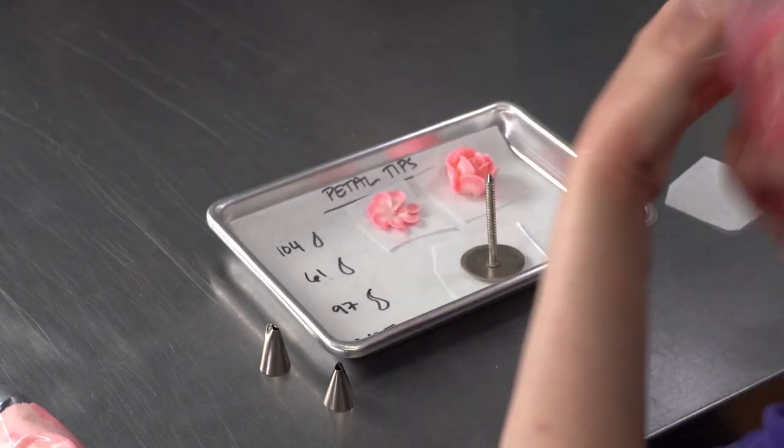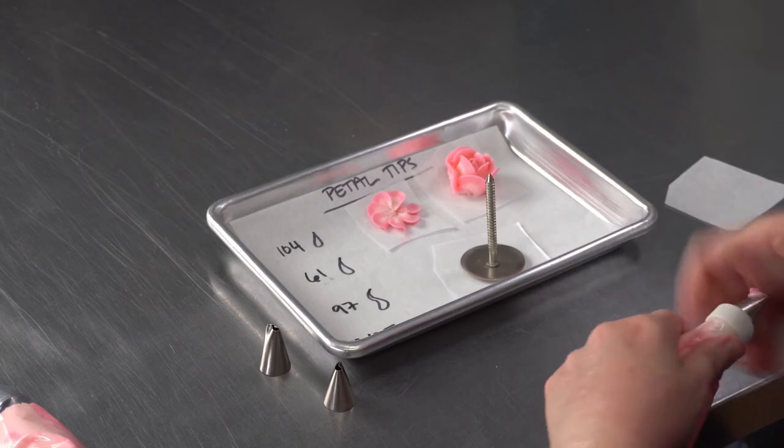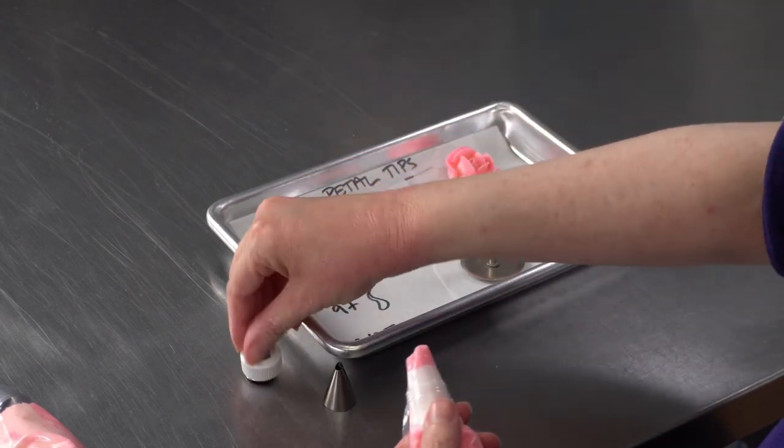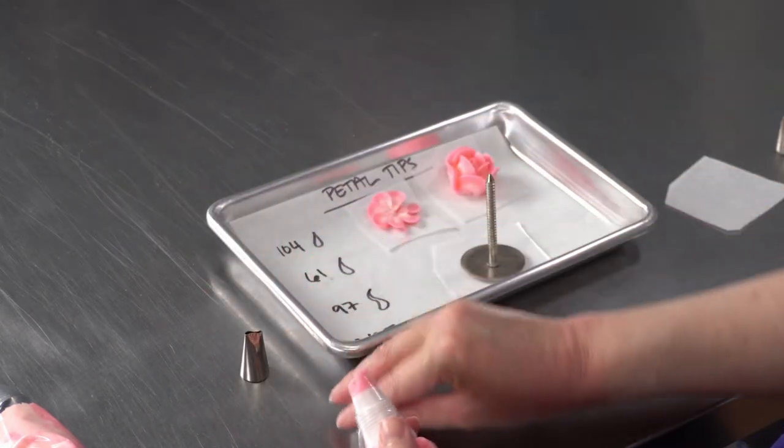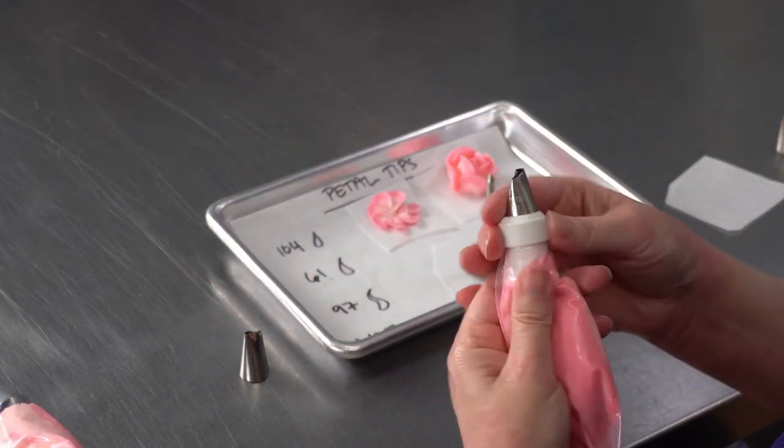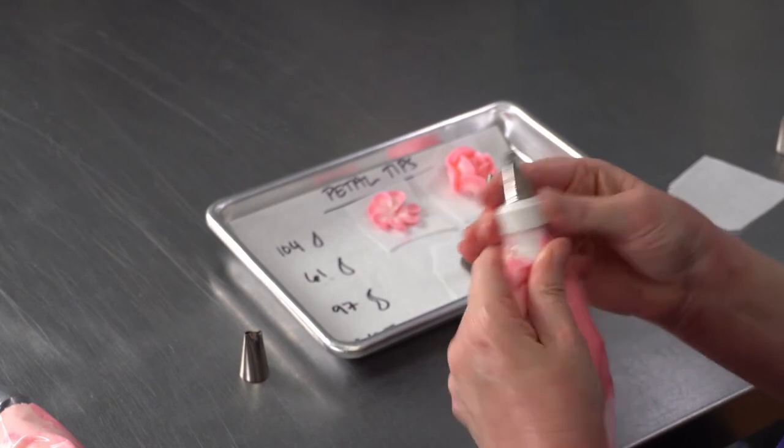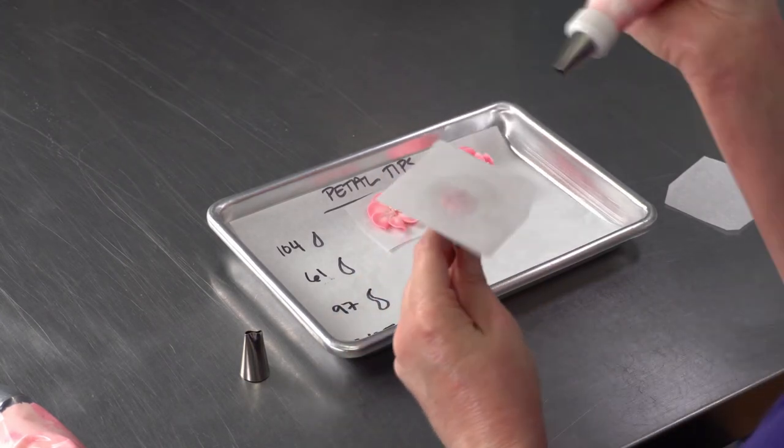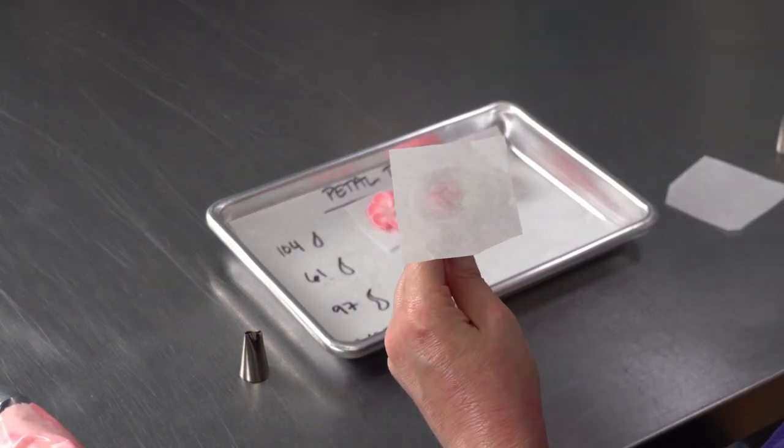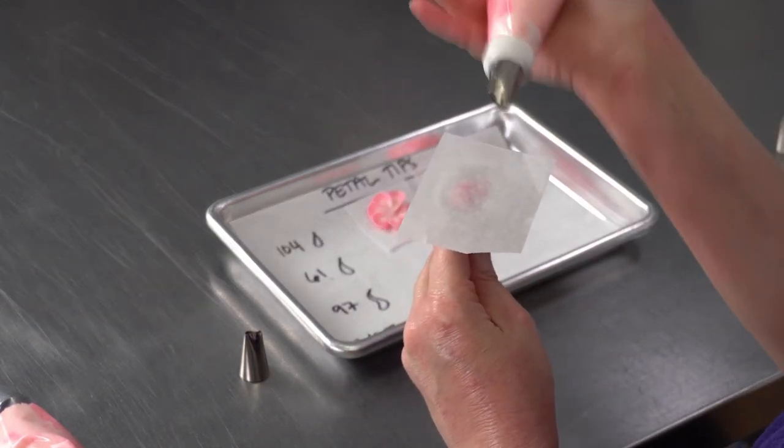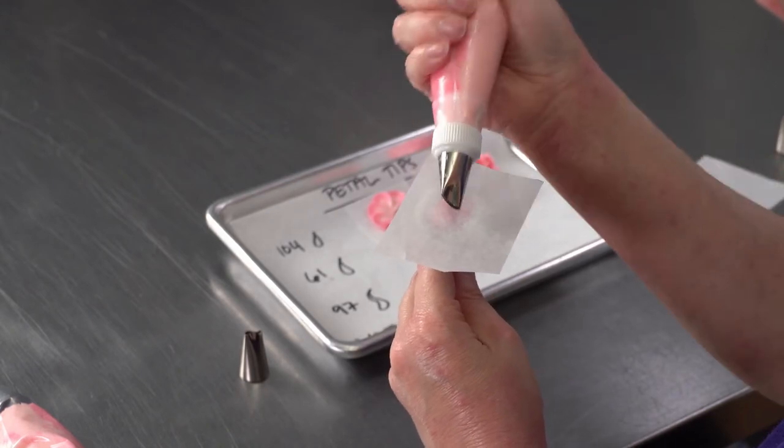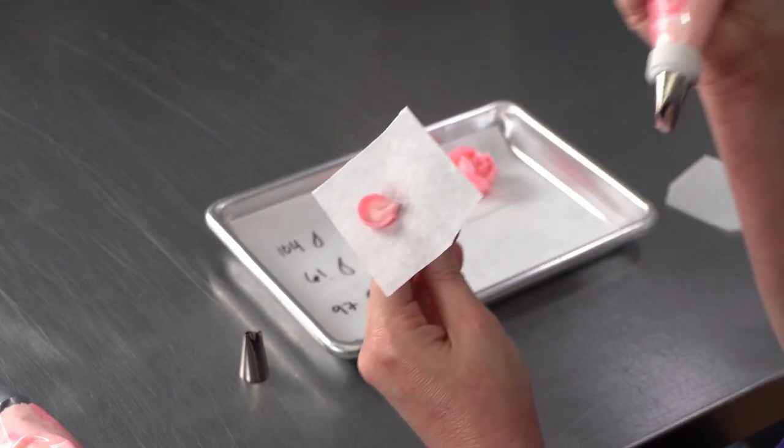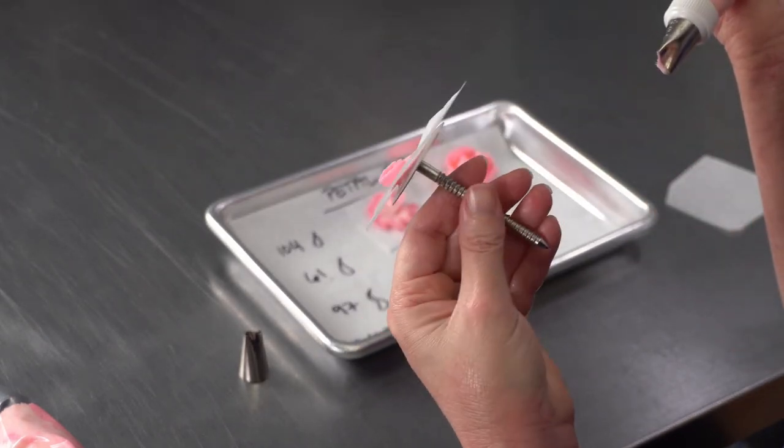So I'm going to change tips and use my number 61 first, and I'm going to pipe some other flowers. So one thing you'll notice with the 61 is now when I've got it against the surface and I pipe, I'm getting what would be called cupped petals.